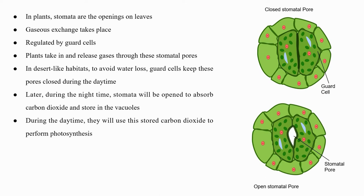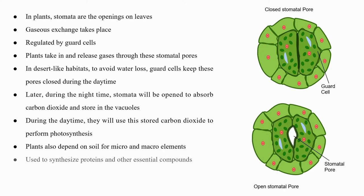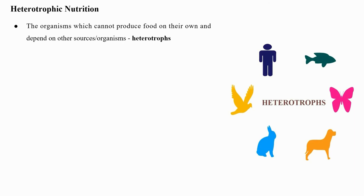Other than photosynthesis, plants also depend on soil for micro and macro elements. These elements are used to synthesize proteins and other essential compounds required for the proper functioning and growth of the plants. Organisms which cannot produce food on their own and depend on other sources or organisms are called heterotrophs, and this mode of nutrition is known as heterotrophic nutrition.